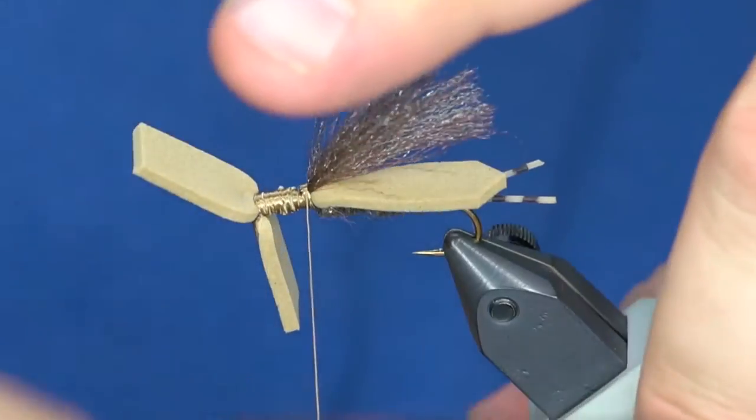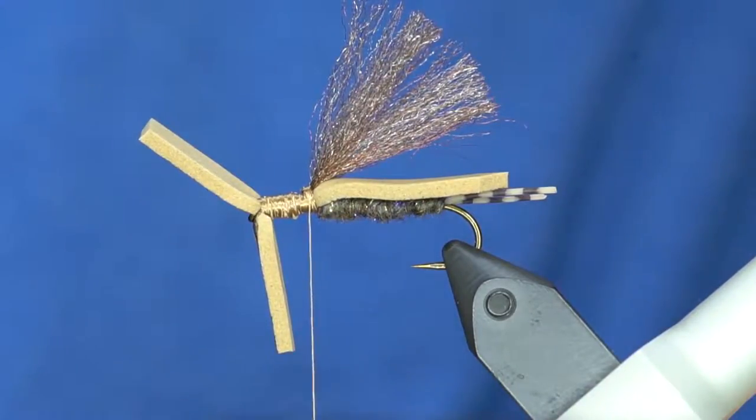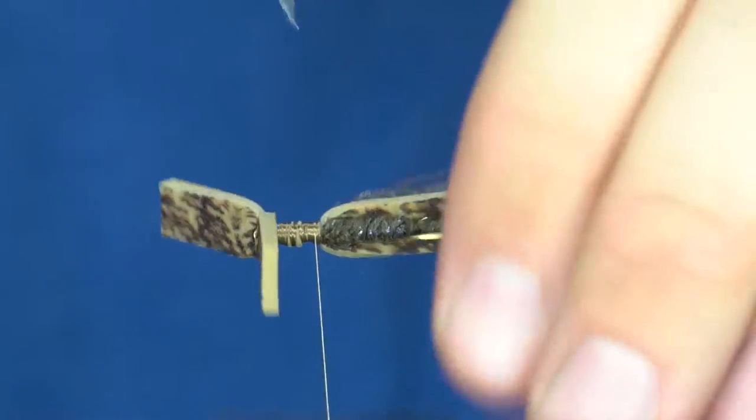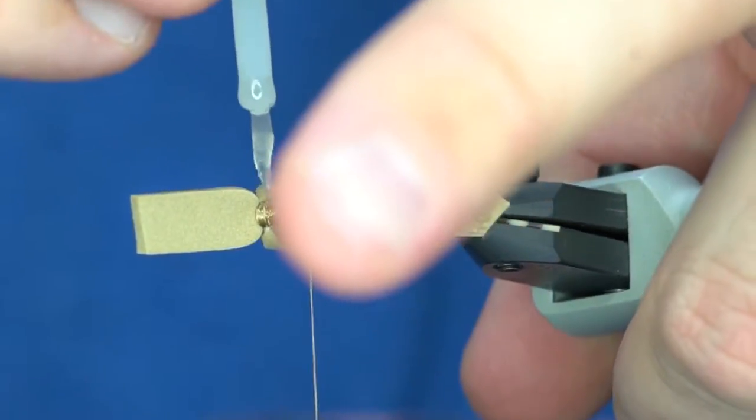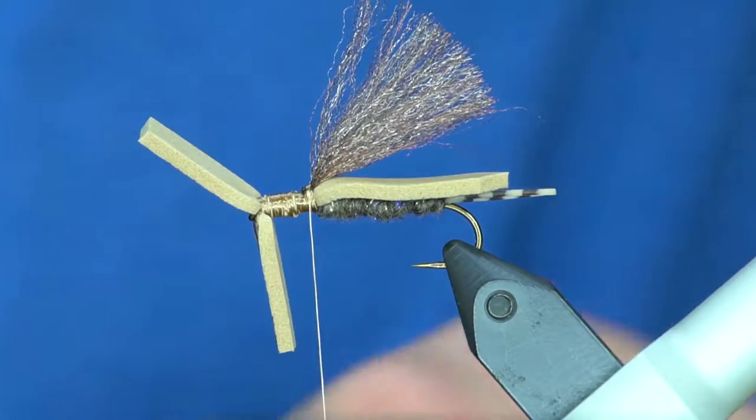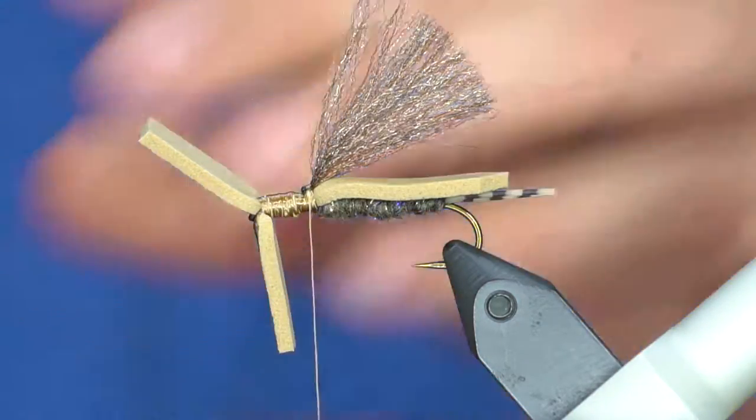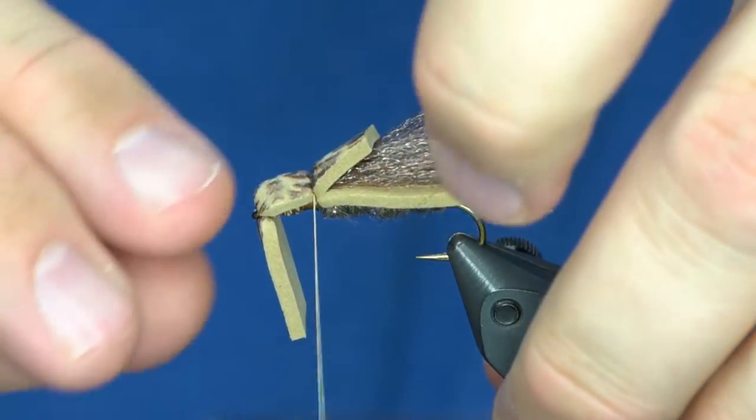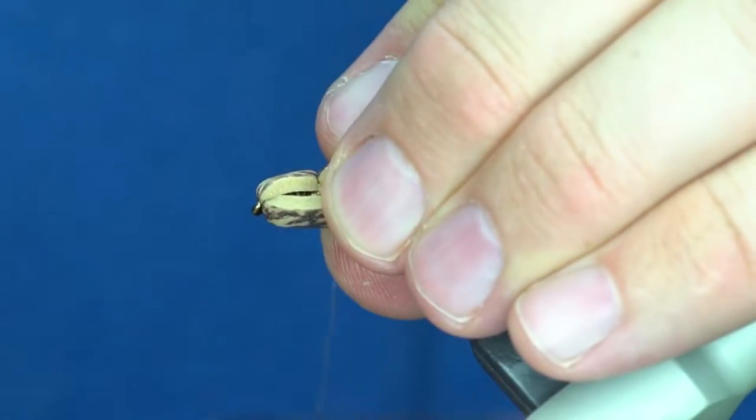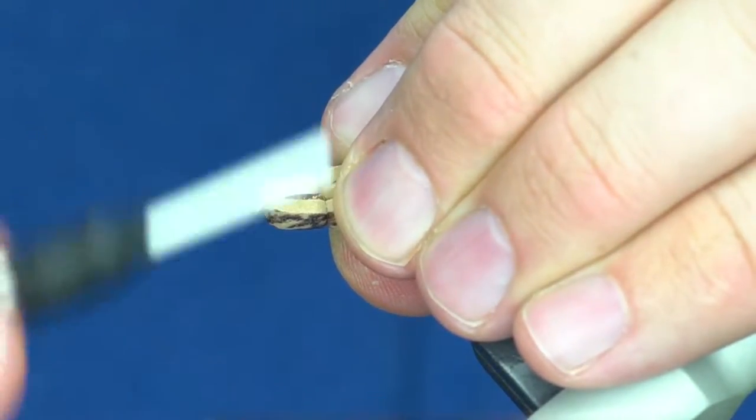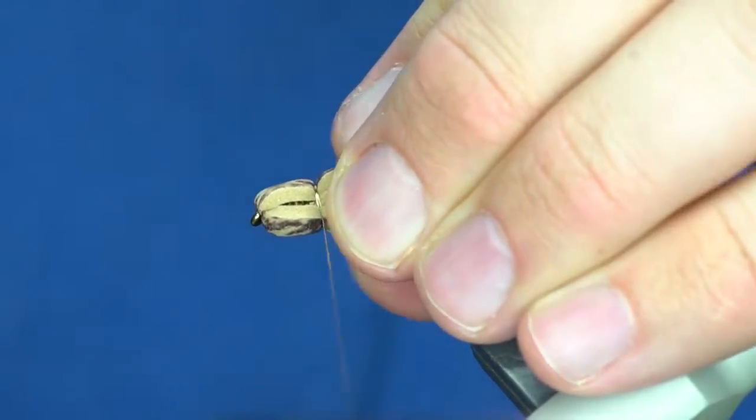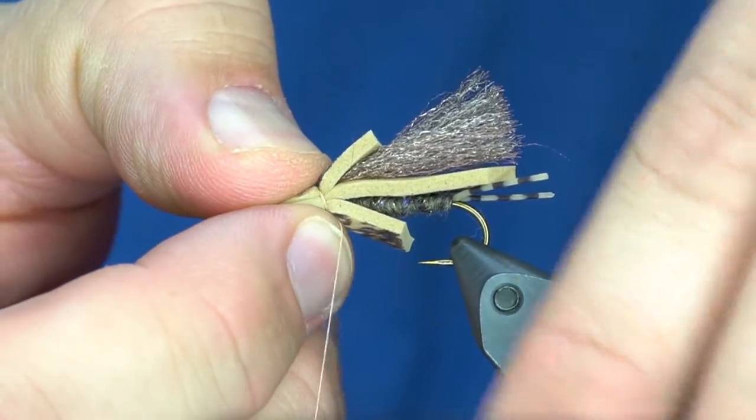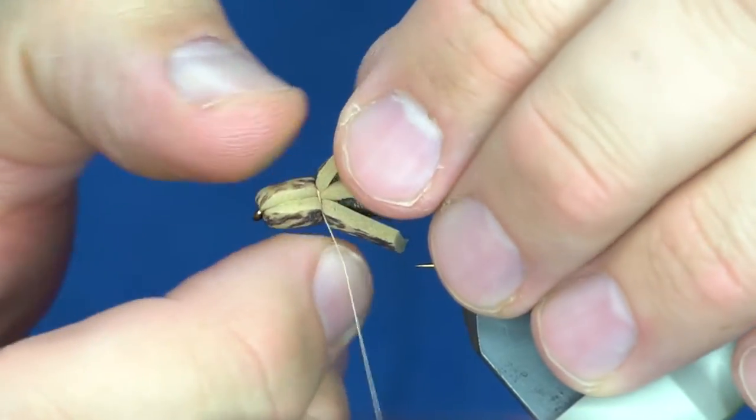This stuff floats really well. From here I'm going to coat all these thread wraps with super glue, with the Z mint, just a thin layer. Now I'm going to take the bullet head pieces and squish those down over the body and make a bullet head. Once I have it like this, you can see there's a little bit of a gap there. I'm just going to squeeze and that gap will go away.